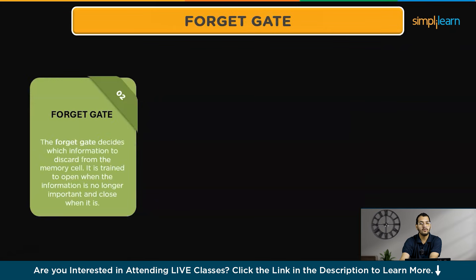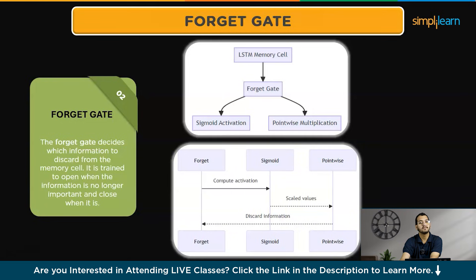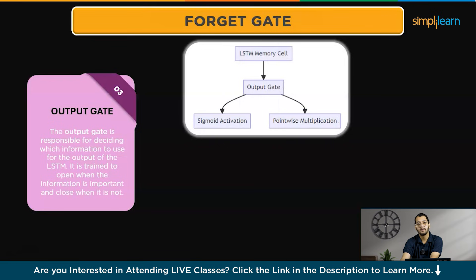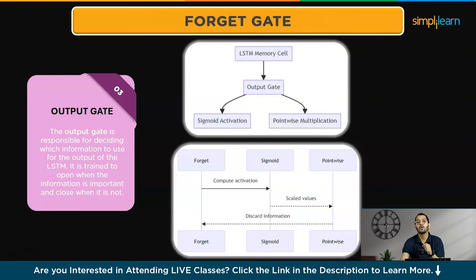The forget gate controls the flow of information out of the memory cell, deciding what to discard. It also uses a sigmoid activation function to scale the values between zero and one, followed by point-wise multiplication to determine what information to forget. The output gate controls what information is used for the output. It uses a sigmoid activation function to scale values from zero to one, then applies point-wise multiplication to produce the output of the LSTM unit. These gates are trained using backpropagation, opening and closing based on the input and the previous hidden state, allowing the LSTM to selectively retain or discard information and effectively capture long-term dependencies.